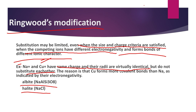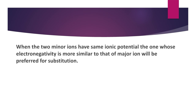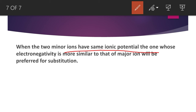So Ringwood's modification tells us that substitution also depends on electronegativity and ionic character — it is not always true that an element with higher ionic potential will necessarily substitute another. When two ions have similar ionic potential, the one whose electronegativity is more similar to that of the major ion being substituted will lead to substitution; a difference in electronegativity will prevent substitution. This is a less commonly occurring phenomenon.